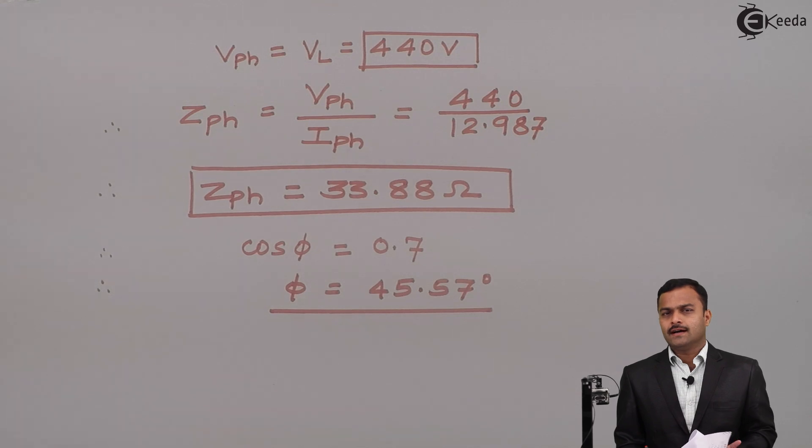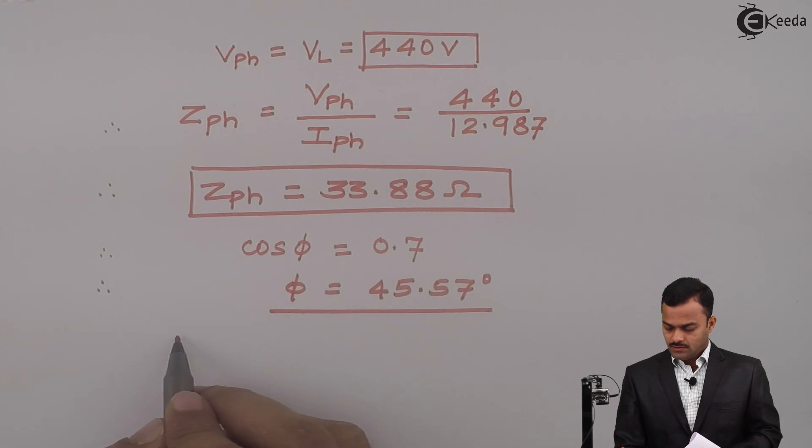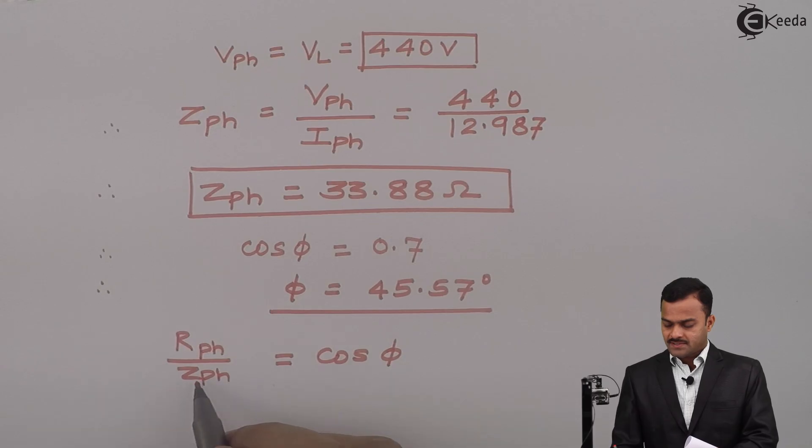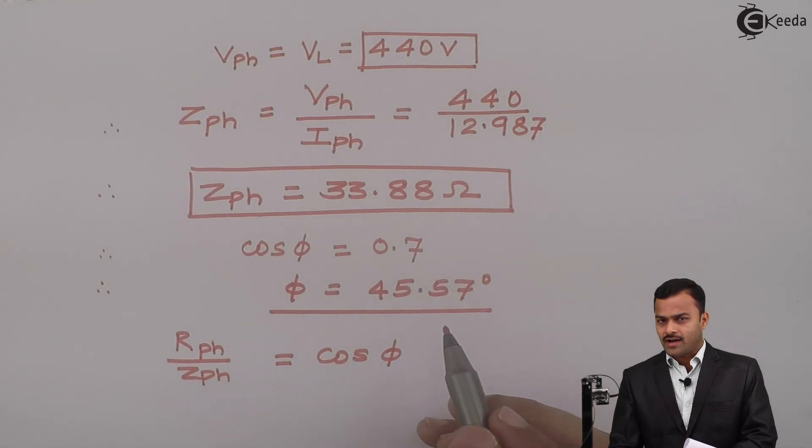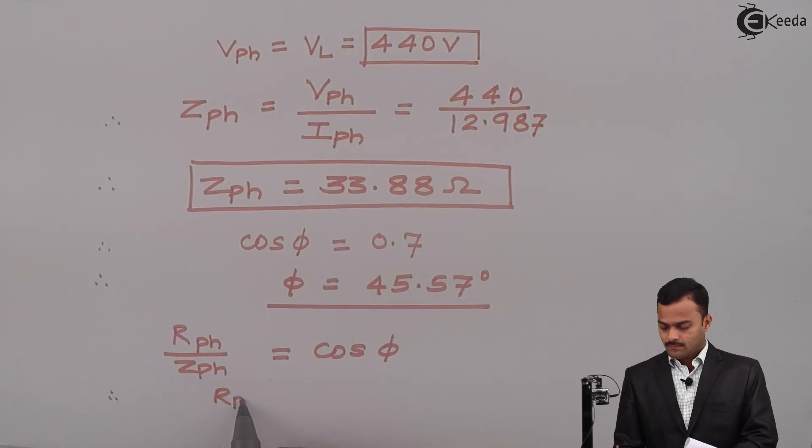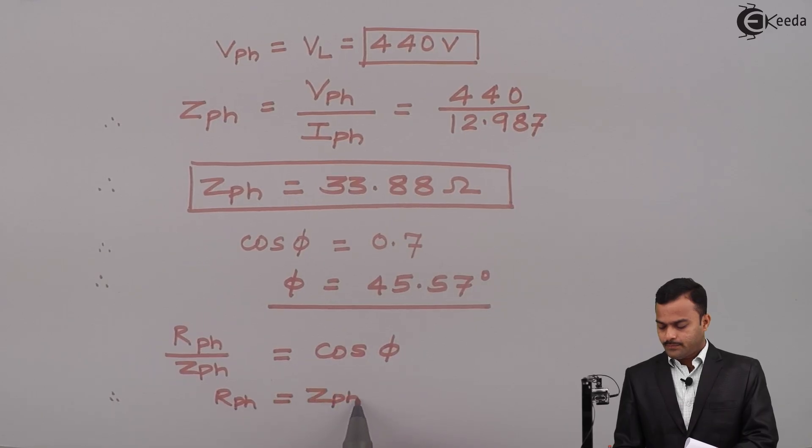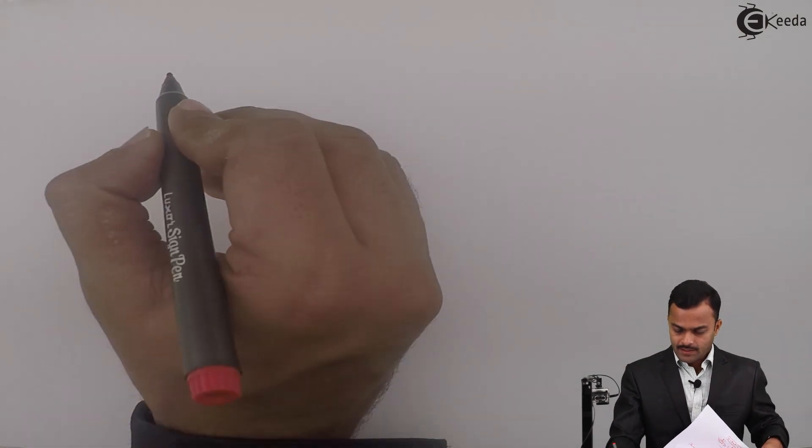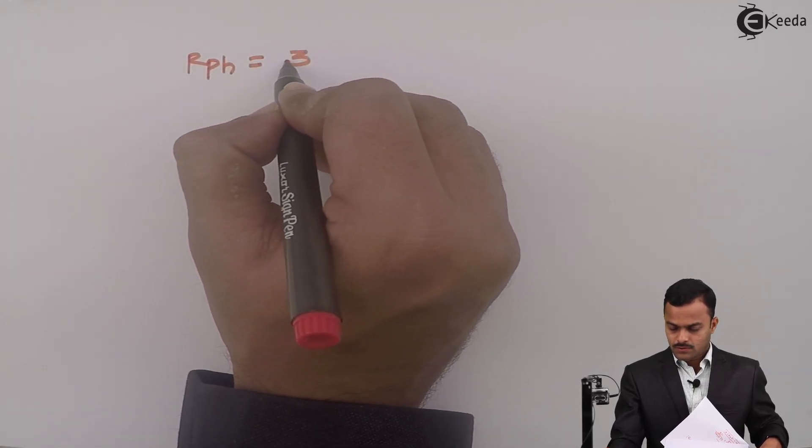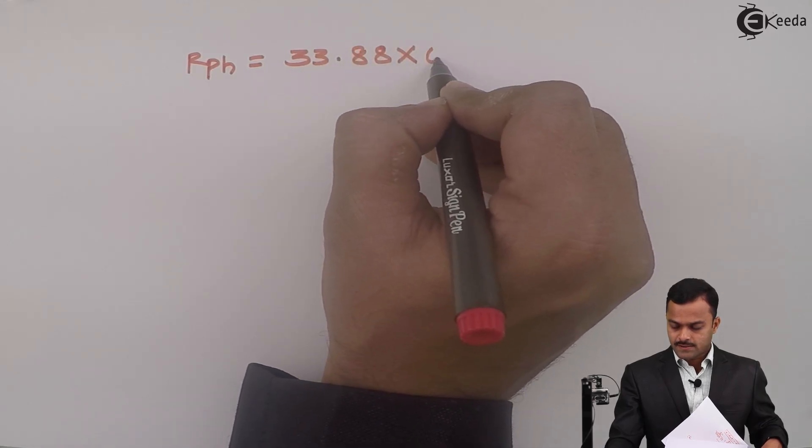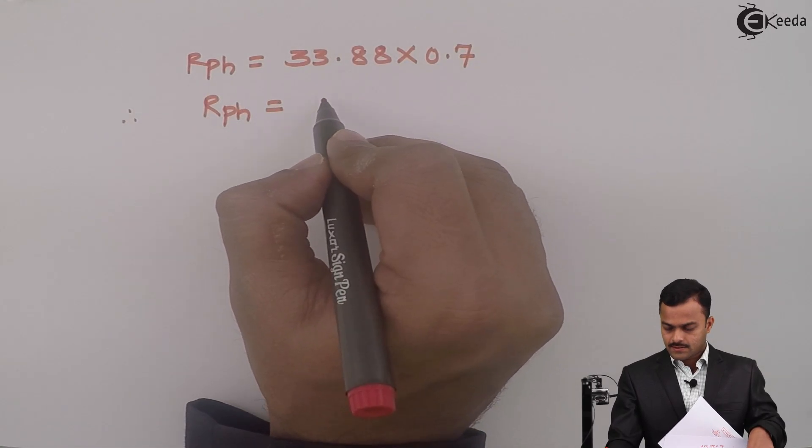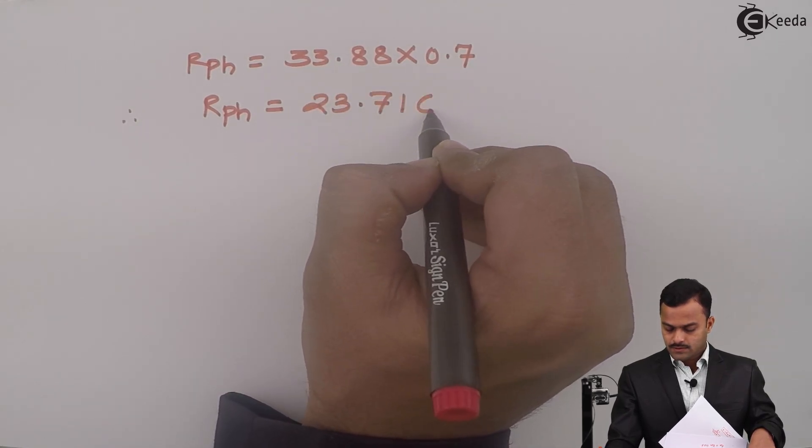Let's use this phi to get RPh and XPh. RPh upon ZPh is the power factor, which is cos phi. I know the value of ZPh and cos phi, so RPh equals ZPh into cos phi. If I substitute the values, I will get RPh equal to 33.88 times 0.7. After solving this, I will get RPh as 23.716 ohms.